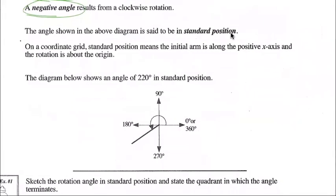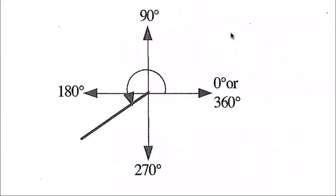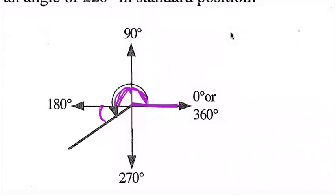Here in this diagram, they show an angle of 220 degrees in standard position. This is a rotation angle of 220 degrees in standard position. We always indicate the angle with an arrow starting on our initial arm. So this is 90 degrees, this is another 90 degrees, and then this remaining part adds up to 220 — so this part is 40 degrees.